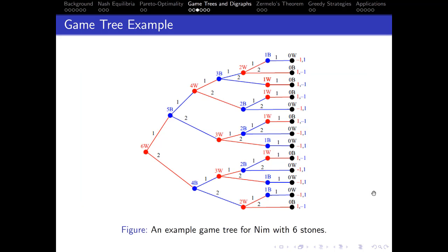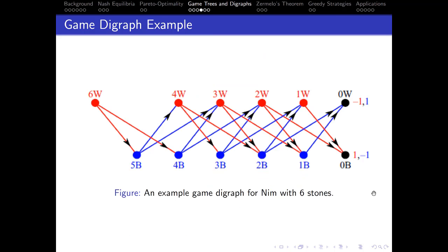Here is an example game tree for Nim with six stones. Calling the players white and black, the first player has six stones and can choose to pick either one or two, sending play to either the top or bottom branch of the tree. At each point, black can choose to remove one or two stones. This continues branching until reaching zero stones, at which point you can see which player was about to move and will lose, with payoffs listed on the right. The game digraph represents the same outcome more compactly.